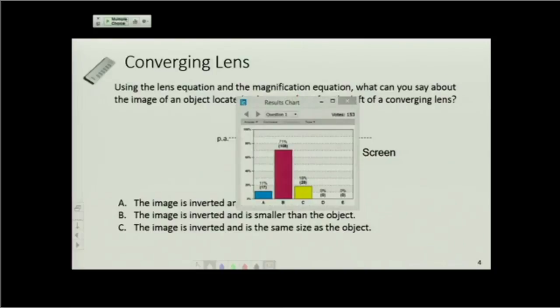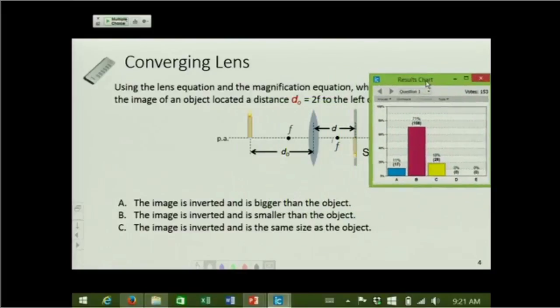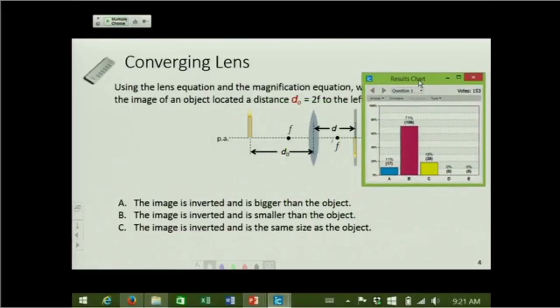Alright, so the majority of the class, this was, I think, one of the checkpoint questions or the pre-lecture questions. The image is inverted and smaller than the object is what most of you said. Did anyone want to give me a quick explanation for how that works? No? No volunteers?